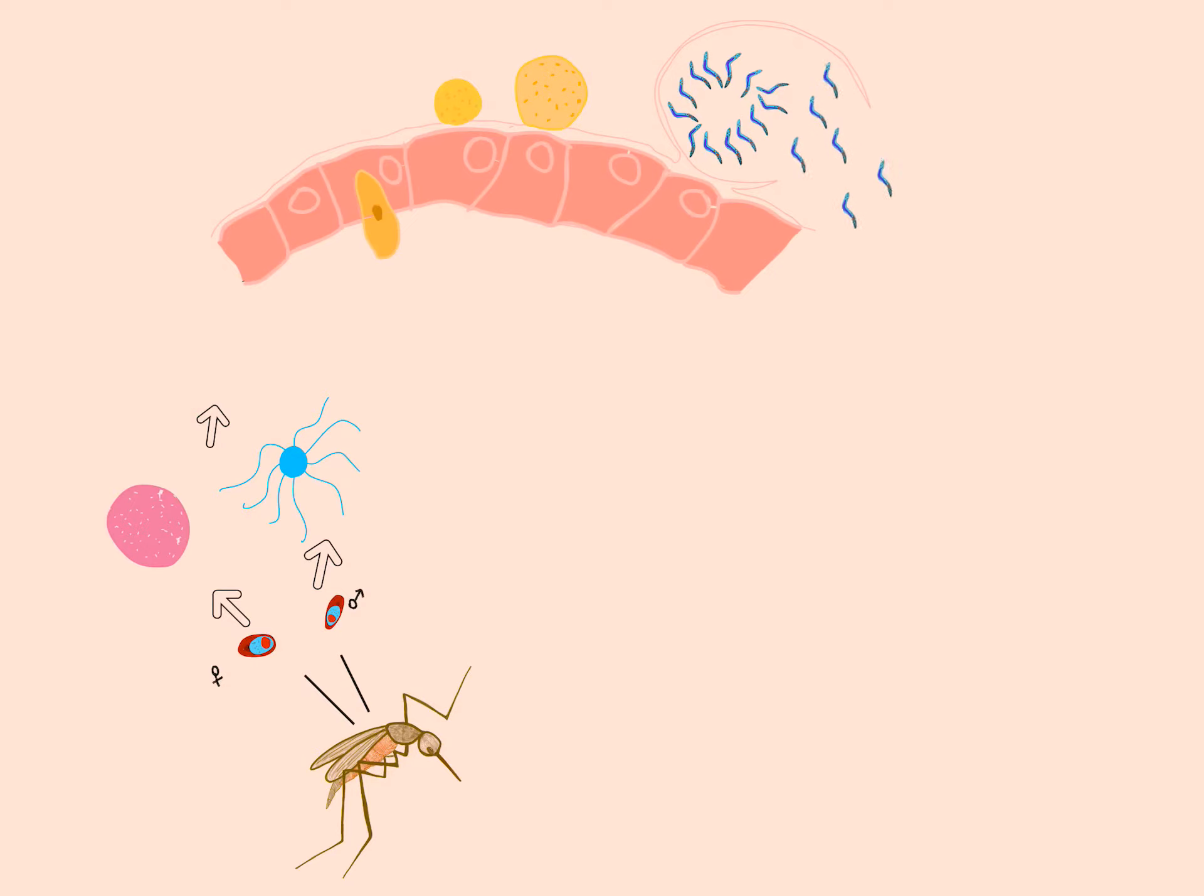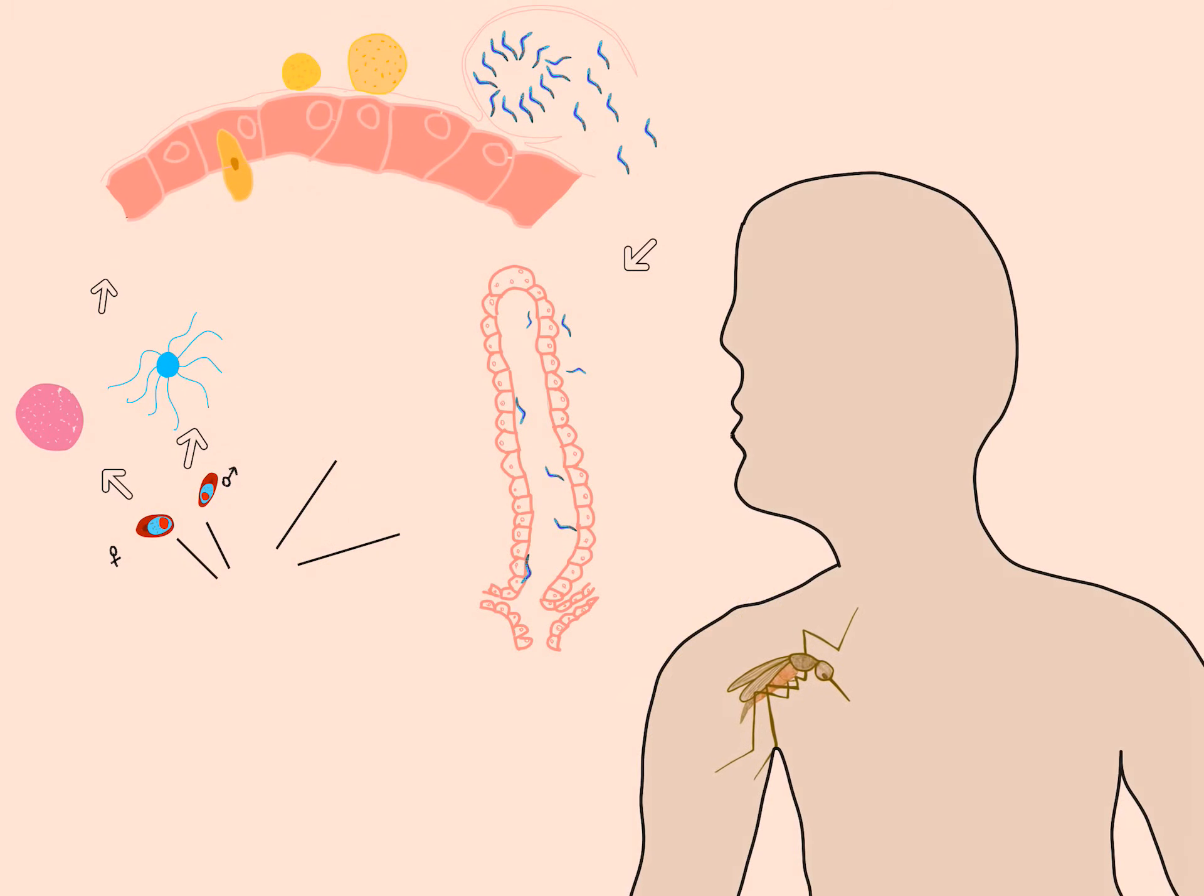Oocyst eventually bursts, releasing sporozoites into the body cavity, which travel to salivary glands of mosquito. The cycle is complete now, and when this mosquito bites a healthy human, the cycle begins anew.